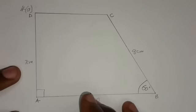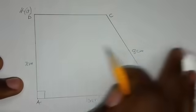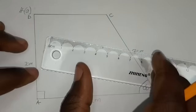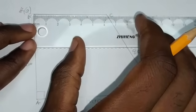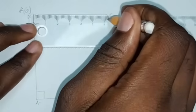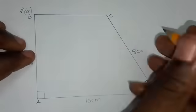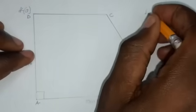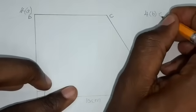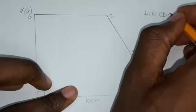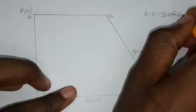Question 4B says: measure and write the length CD. Get a ruler starting from 0 — don't start from 1. Measure the length CD. The length CD is equal to 6.2 centimeters.